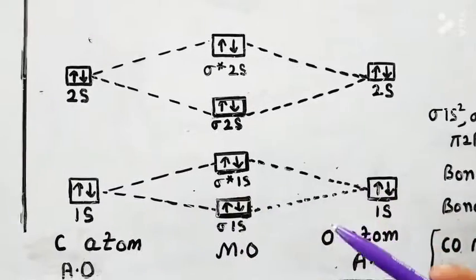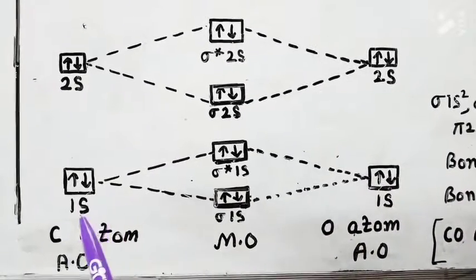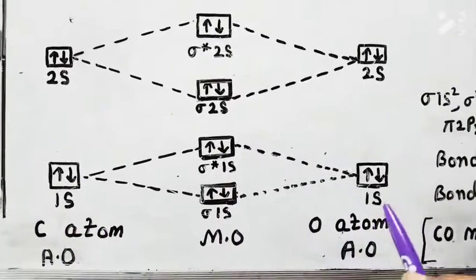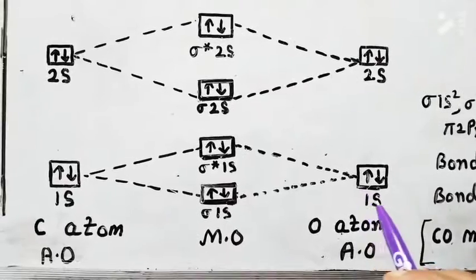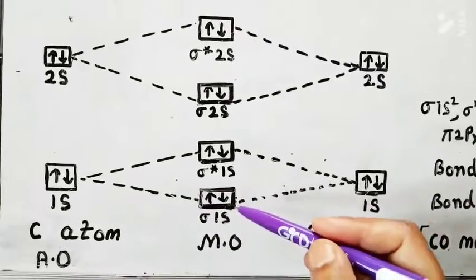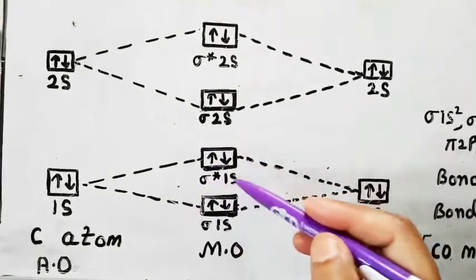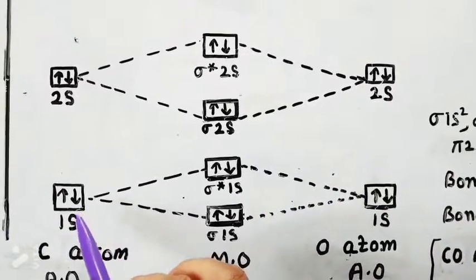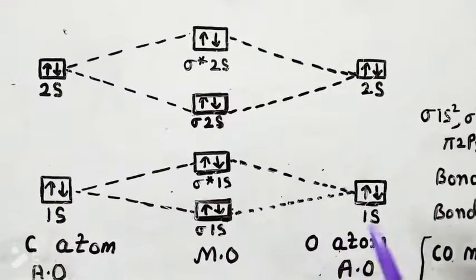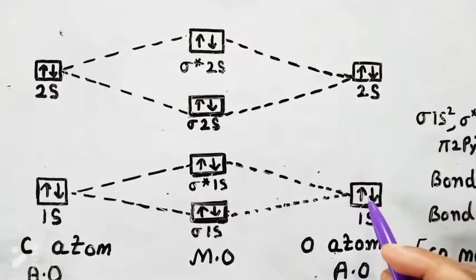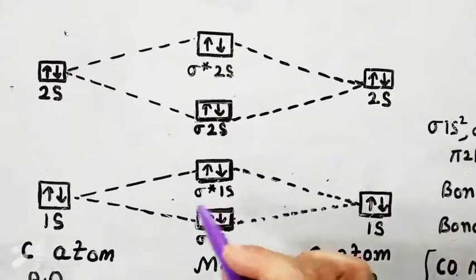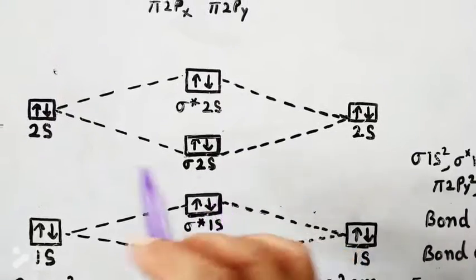When the 1s atomic orbital of the carbon atom and the 1s atomic orbital of the oxygen atom combine with each other, two molecular orbitals will form: one is sigma 1s, a bonding orbital, and the second is sigma star 1s, an anti-bonding orbital. In the carbon atom, the 1s atomic orbital has two electrons, and in oxygen the 1s atomic orbital also has two electrons, so four electrons total — two will be in bonding and two will be in anti-bonding.